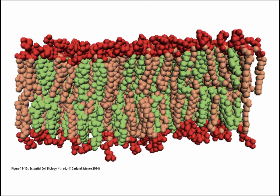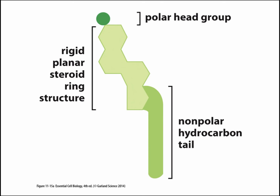Here we see an animal membrane exhibiting the green cholesterol molecules inter-dispersed between the red-colored phospholipid molecules. Cholesterol is a very rigid molecule which interacts with the hydrocarbon tails of the surrounding phospholipids in a way that stabilizes the structure by forming non-covalent bonds.